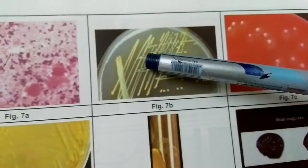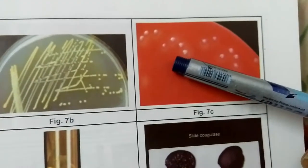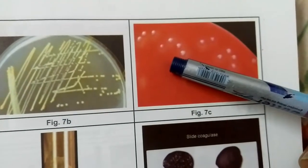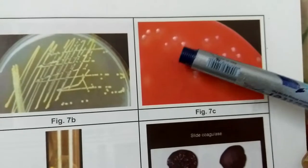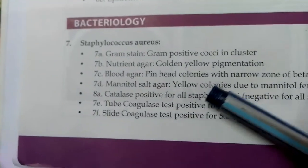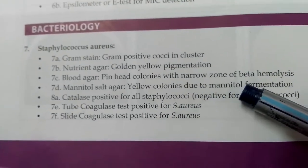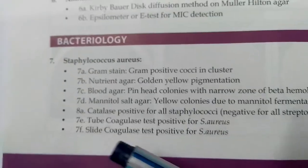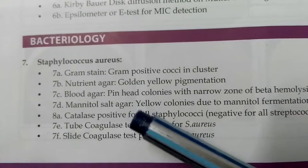Image 7c is blood agar showing pinhead colonies with a narrow zone of beta-hemolysis. You can see here in 7c the pinhead colonies with the narrow zone of beta-hemolysis.